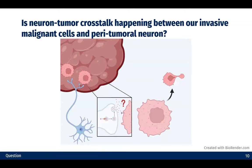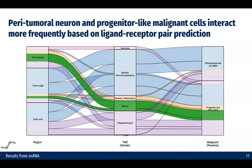All of this looks promising. We are wondering if this previously reported neuron-tumor crosstalk is indeed happening in our population — specifically in our invasive malignant cell population and peritumoral neurons. In order to answer that question, we conducted cell-cell communication analysis to identify the ligand-receptor pairs predicted between different cell types, using the number of predicted pairs as a proxy for interaction frequency.